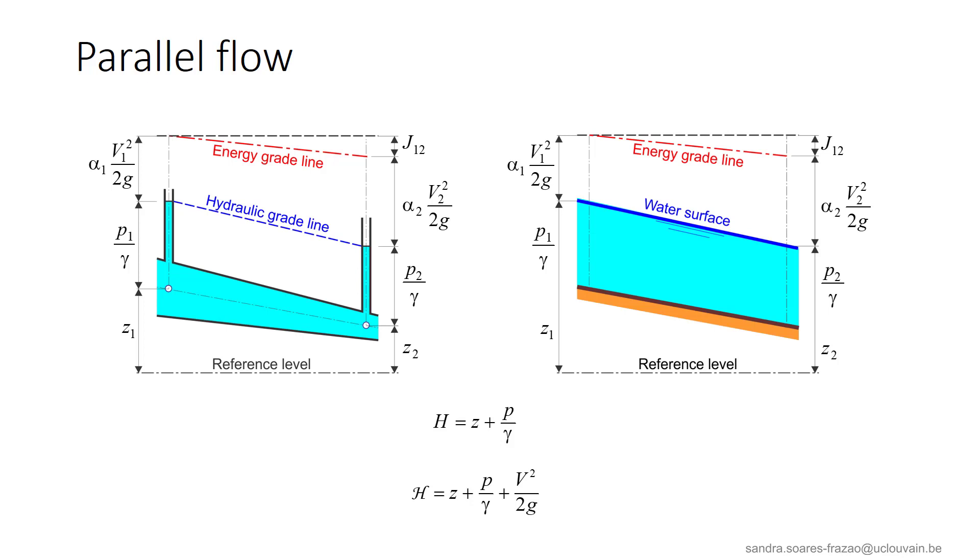If we consider an open channel flow, assuming also a parallel flow, the free surface becomes the piezometric line. Assuming also that the velocity is uniformly distributed over the cross section, the head in a cross section can also be defined with the same equation here. The head loss J12 is then just the difference of head between the two cross sections. The head in a cross section of the open channel flow can be written like this, where the level z is now the level of the free surface.